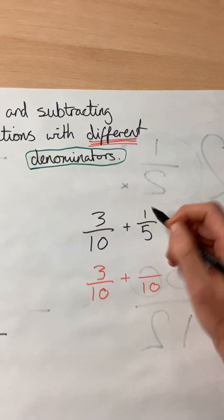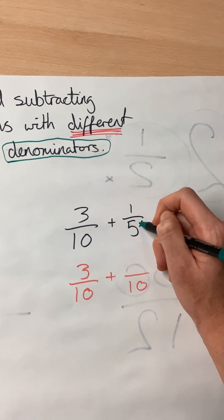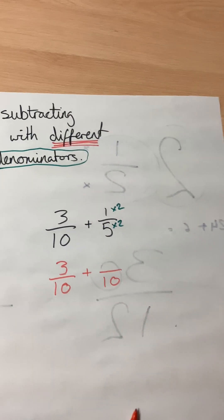So three-tenths plus so many tenths. What do I need to times this by to make it into ten? Five times two.